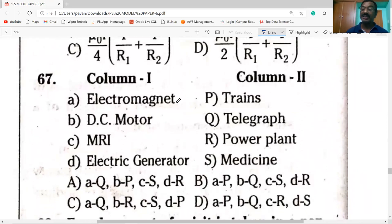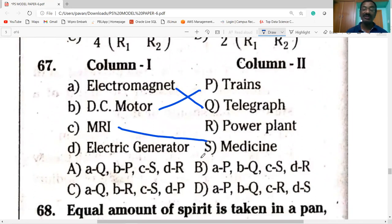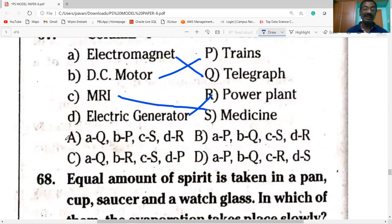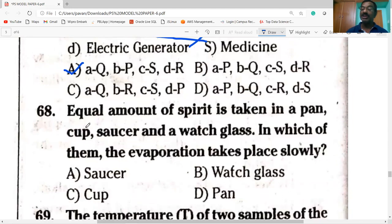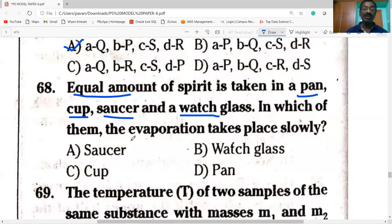Next, electromagnet applications: it is used in telegraphs, DC motor, trains, MRI scan (magnetic resonance image) in medicine, electric generator in power plants. So option A is correct. Next question: equal amounts of spirit is taken in pond, cup, saucer and watch glass. In which of the following evaporation takes place slowly?